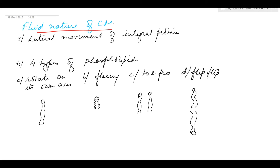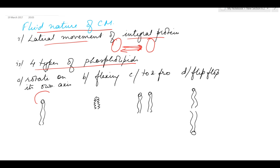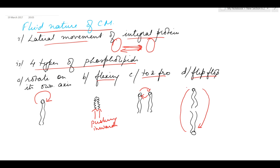The fluid nature of the cell membrane is due to the lateral movement shown by integral proteins — the integral proteins that penetrate the phospholipid bilayer are capable of changing their positions laterally. Phospholipid molecules can show four types of movements: rotation on their own axis; flexing, where they push themselves inwards; lateral movement, shifting position with adjacent molecules; and flip-flop, changing position with molecules on the other layer. It is due to these movements that the fluid nature of the cell membrane can be seen.